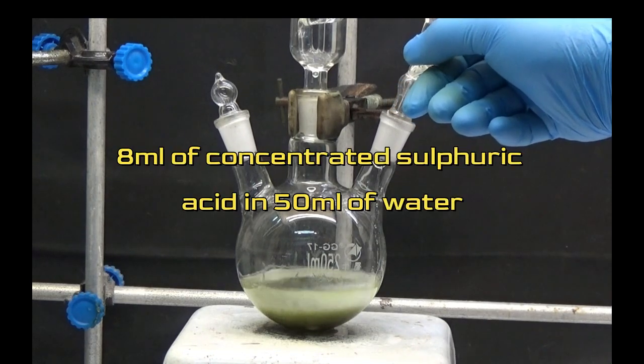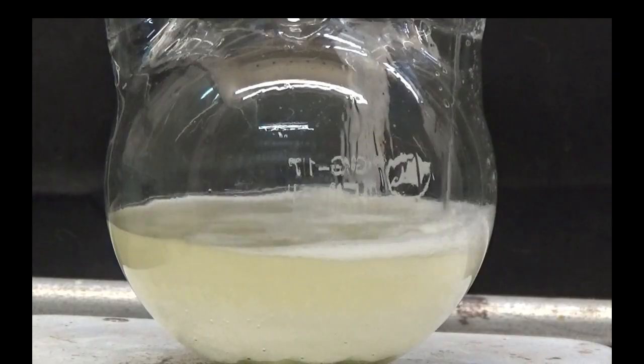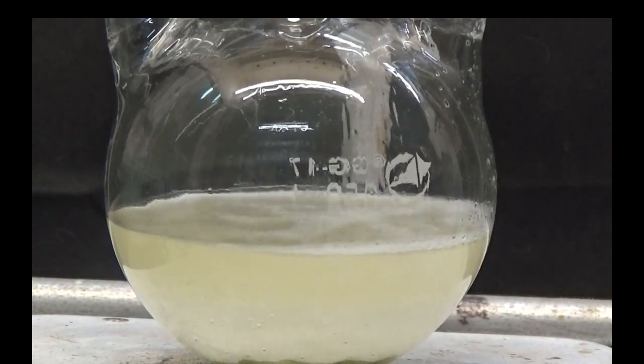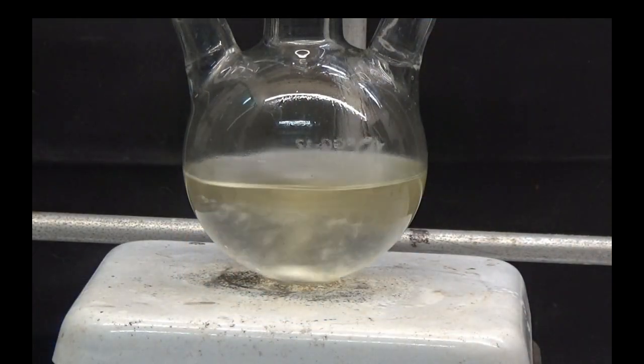Add solution of 8 milliliters of concentrated sulfuric acid in 50 milliliters water stirring vigorously. It is to be observed how the green mass dissolves.